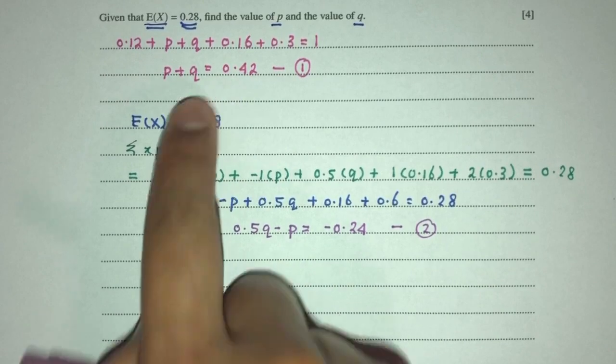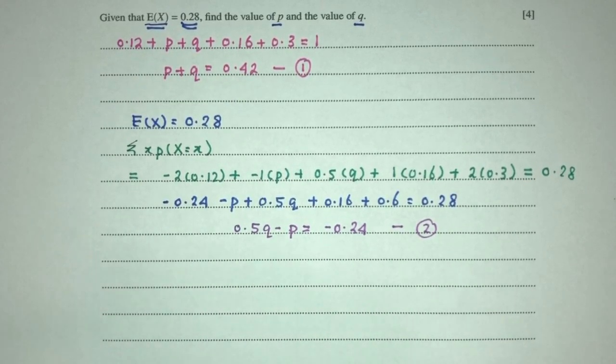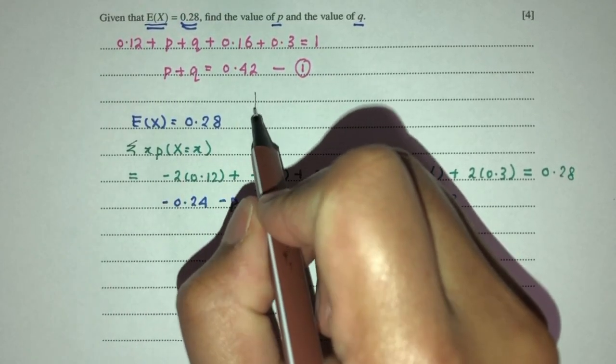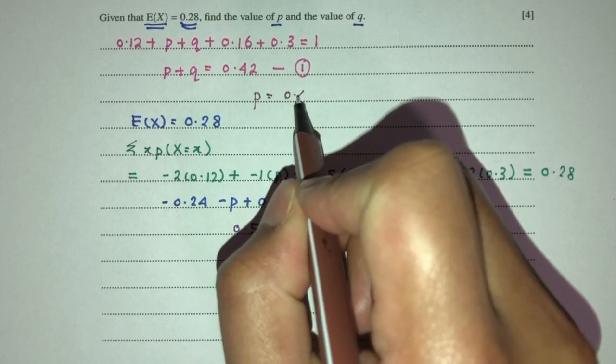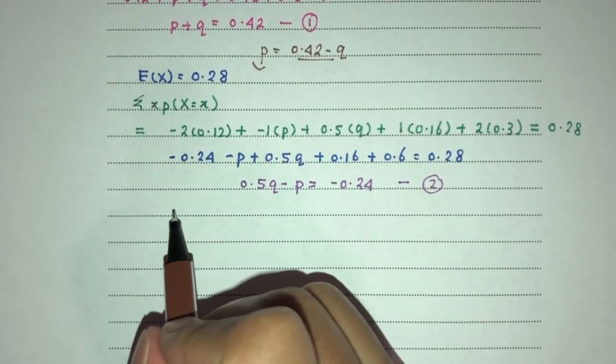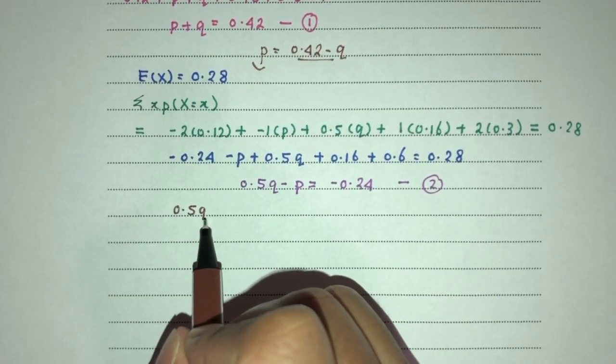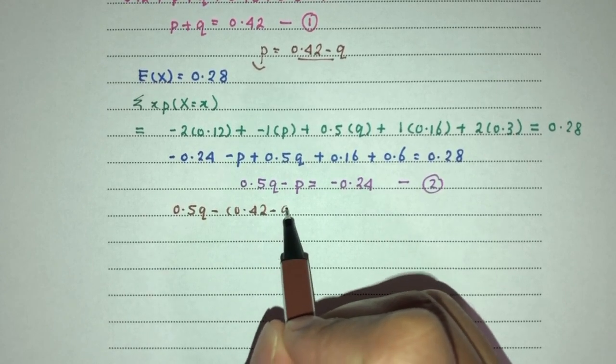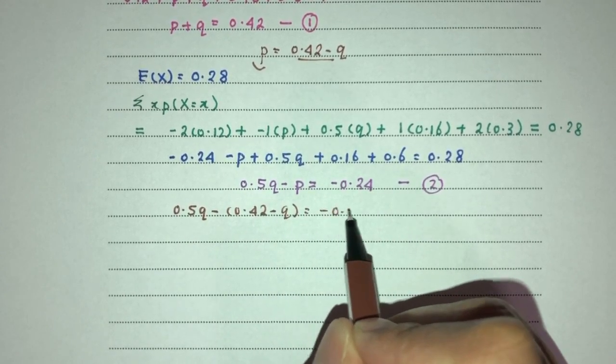So, now we have this equation and this equation. Obviously, we have to solve these ones simultaneously to find the values of P and Q. So, let me make P the subject. P as subject will be the value of 0.42 minus Q. Replace P by this. That will be 0.5Q minus P should be 0.42 minus Q is equal to minus 0.24.